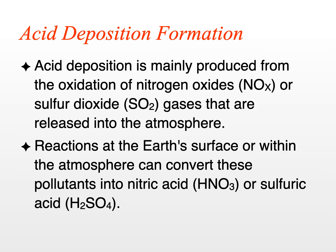How does acid precipitation and acid deposition form? It's mainly produced from the oxidation of nitrogen oxides or sulfur dioxide. These are gases that are released into the atmosphere by a number of human processes. Reactions at the Earth's surface or within the atmosphere can convert nitrogen oxides into nitric acid, and sulfur dioxide into sulfuric acid.